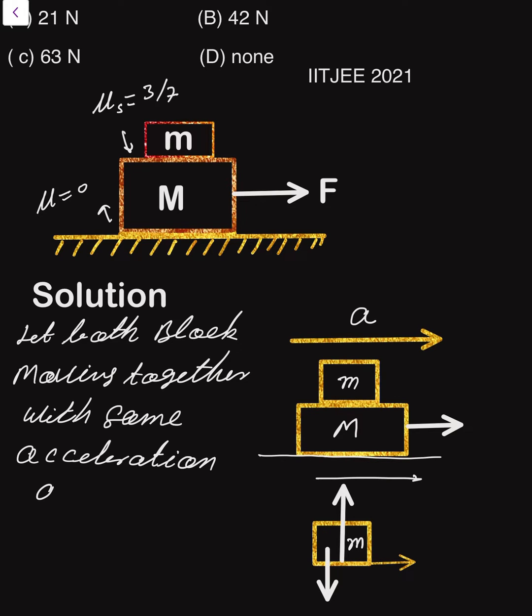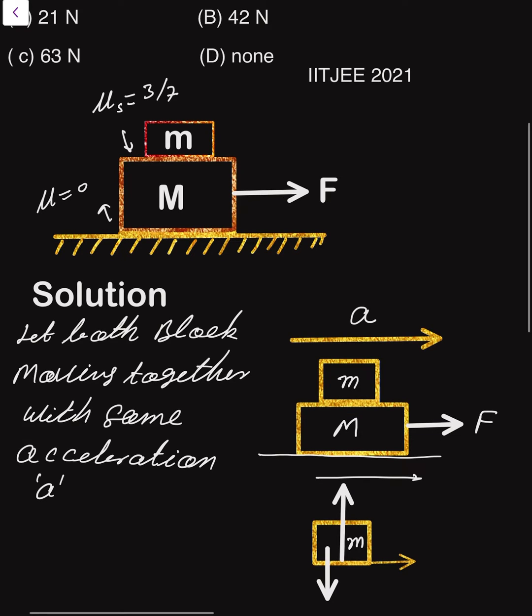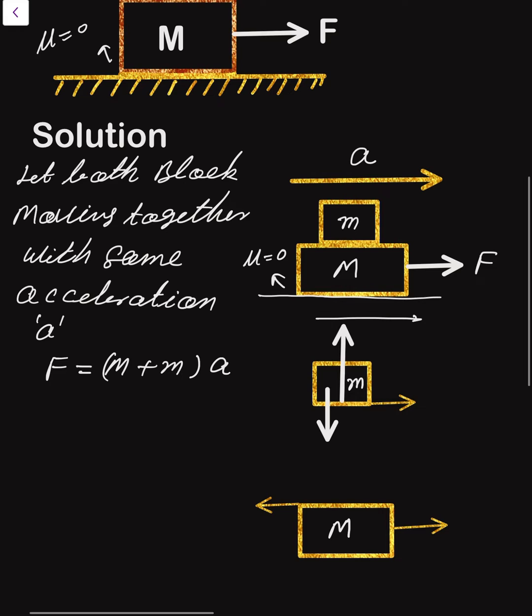The coefficient of friction between the capital M block and the surface is zero. So F is written as capital M plus small m into a, and that F is the friction force in between.